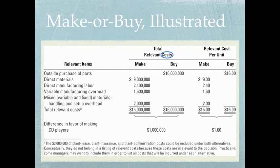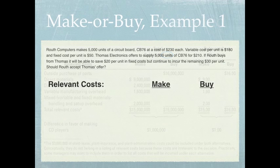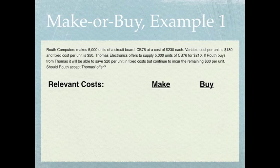Let's carry this forward into an example of our own. Ruth Computers makes 5,000 units of a circuit board CB76 at a cost of $230 each. Variable cost per unit is $180 and fixed cost per unit is $50. Thomas Electronics offers to supply 5,000 units of CB76 for $210. If Ruth buys from Thomas, it will be able to save $20 per unit in fixed cost, but continue to incur the remaining $30 per unit. Should Ruth accept Thomas's offer?